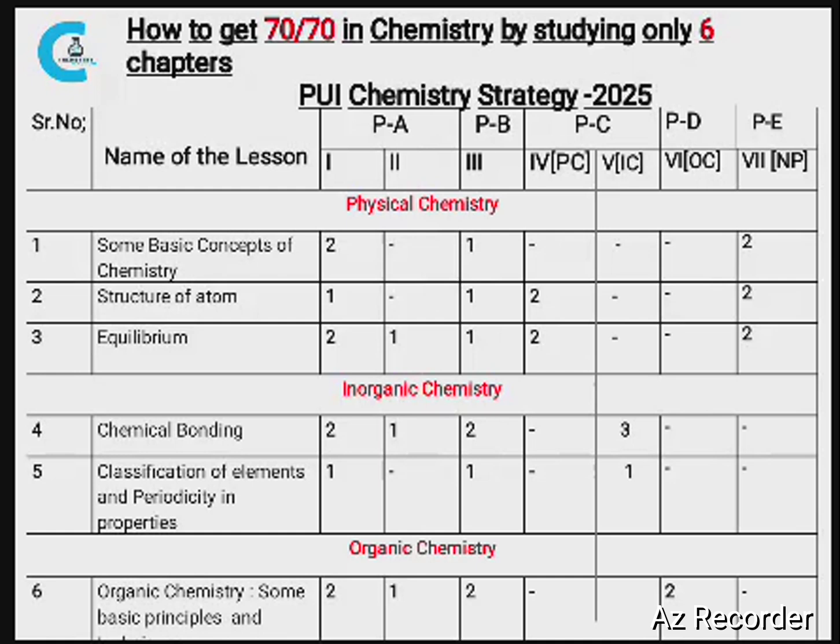For Part C (3-mark questions), this year they have made changes. Part C has two sub-sections: Roman numeral 4 covers physical chemistry theory — no numericals, those are in Part E — with Structure of Atom (2 questions) and Equilibrium (2 questions). Roman numeral 5 covers inorganic chemistry: Chemical Bonding (3 questions) and Classification of Elements (1 question) — giving 4 questions, of which you answer only 2. You still have 2 choices.